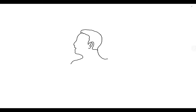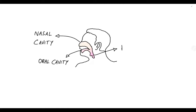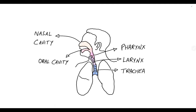The respiratory tract consists of nasal cavity, oral cavity, pharynx, larynx, trachea and lungs.